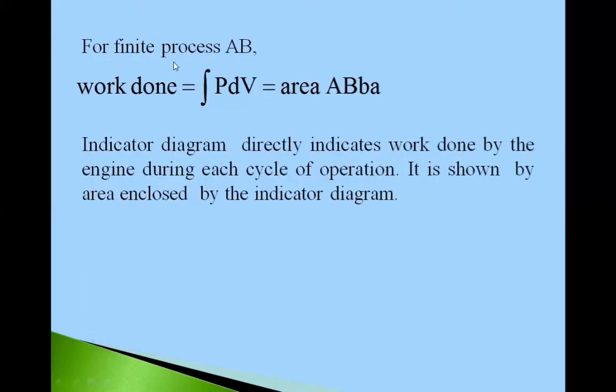Now friends, for finite process AB, means from A to B, suppose system undergoes change from A to B. Then for this finite process, work done is given by integration of PdV. Pressure and change in volume dV is equal to area ABba.